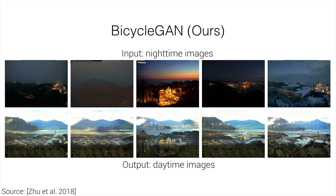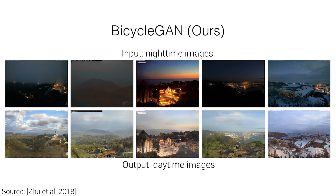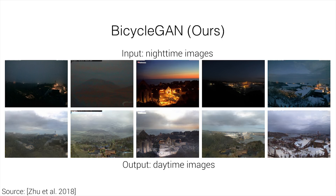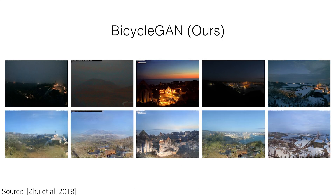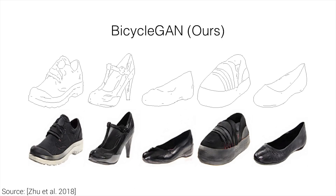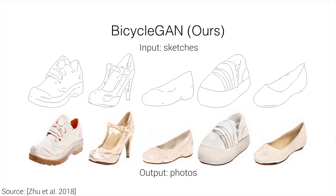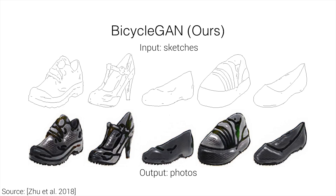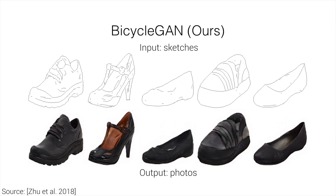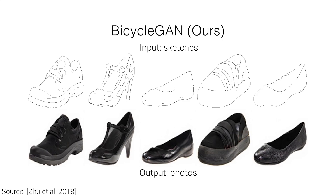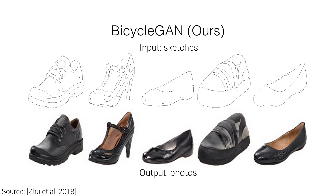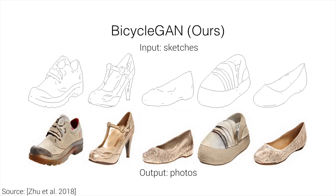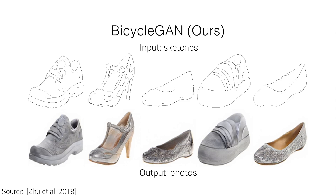This is done through a generative adversarial network. This is an architecture where we have a pair of neural networks — one that learns to generate new images, and the other learns to tell a fake image from a real one. As they compete against each other, they get better and better without any human interaction.